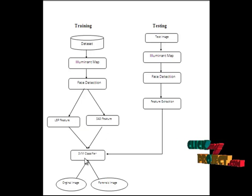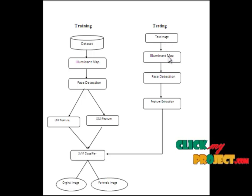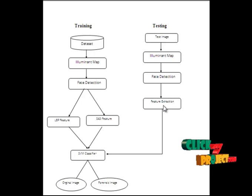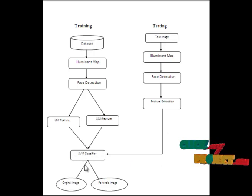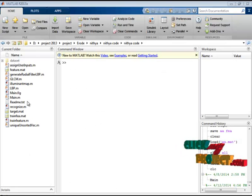The detected face features are trained with the SVM classifier. In the testing stage, a testing image is given; it goes to the illuminant map, then the face is identified. We extract the LBP and statistical features, which are passed to the trained classifier to predict whether the image is original or forensic.